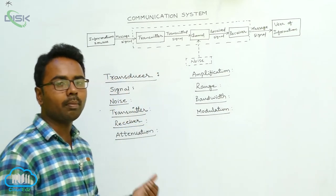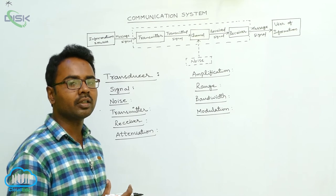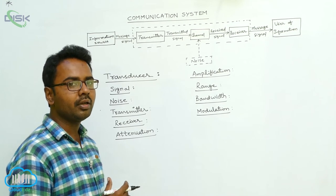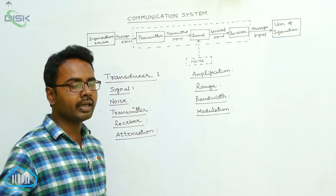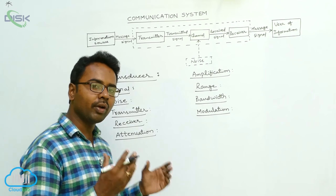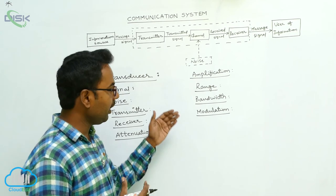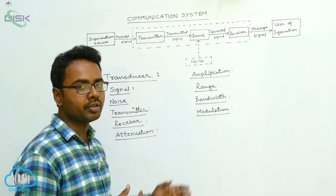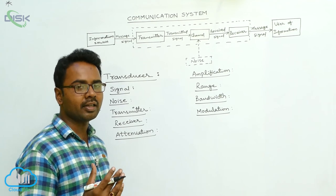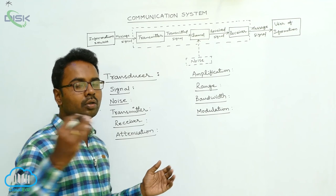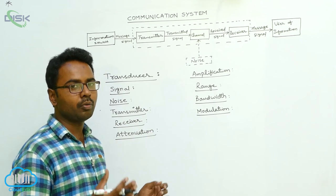Modulation is the process of combining low frequency message signals with high frequency carrier signals. Low frequency signals cannot propagate or transmit over long distances directly. To transmit them over long distances, we superpose the low frequency information signals with high frequency signals. These high frequency signals act as carriers, carrying the information signals from transmitter to receiver over long distances. Long distance communication can only be achieved through the process of modulation.